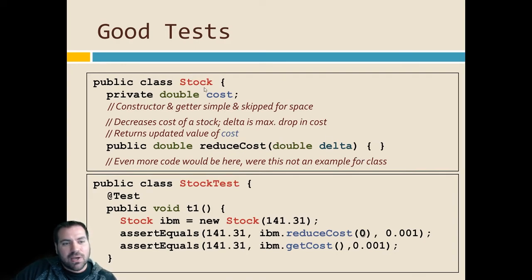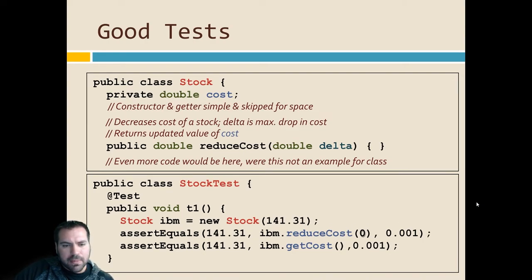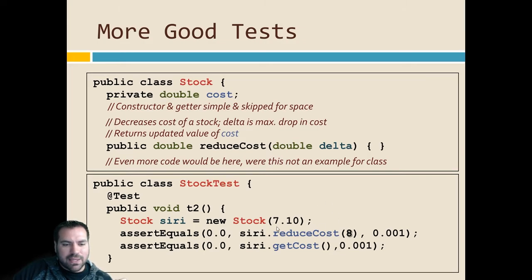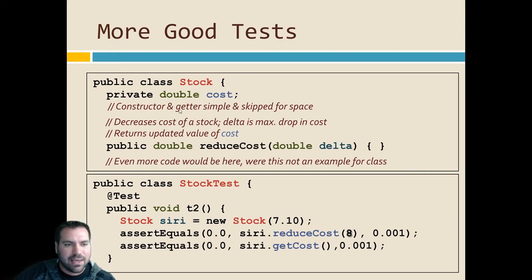Here's a good test: if I have some stock representing the price of a stock in the market and a method that should reduce that price by some value — a good input is testing zero. If I give a reduced cost of zero, is the price going to be the same after I call that? Remember these are doubles, so we always allow some tolerance to account for truncation errors when working with floating point values. Another good test case: make sure that if the stock is reduced where it would go below zero, you don't allow negative prices. If the price is 7.10 and I reduce it by 8, that should be zero, not negative 0.90. Make sure you have the behavior defined in your documentation that your team expects.